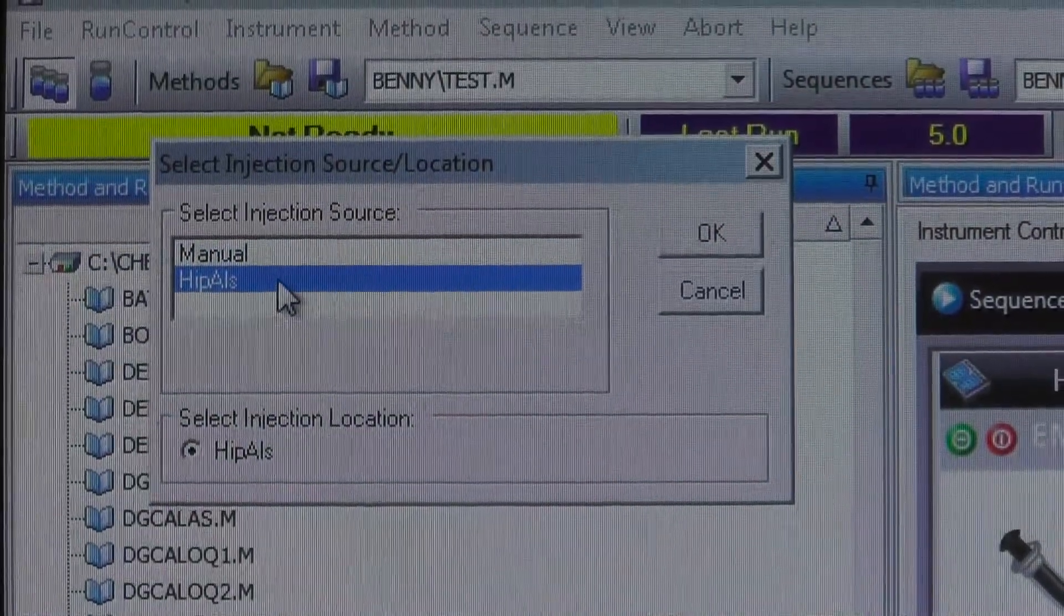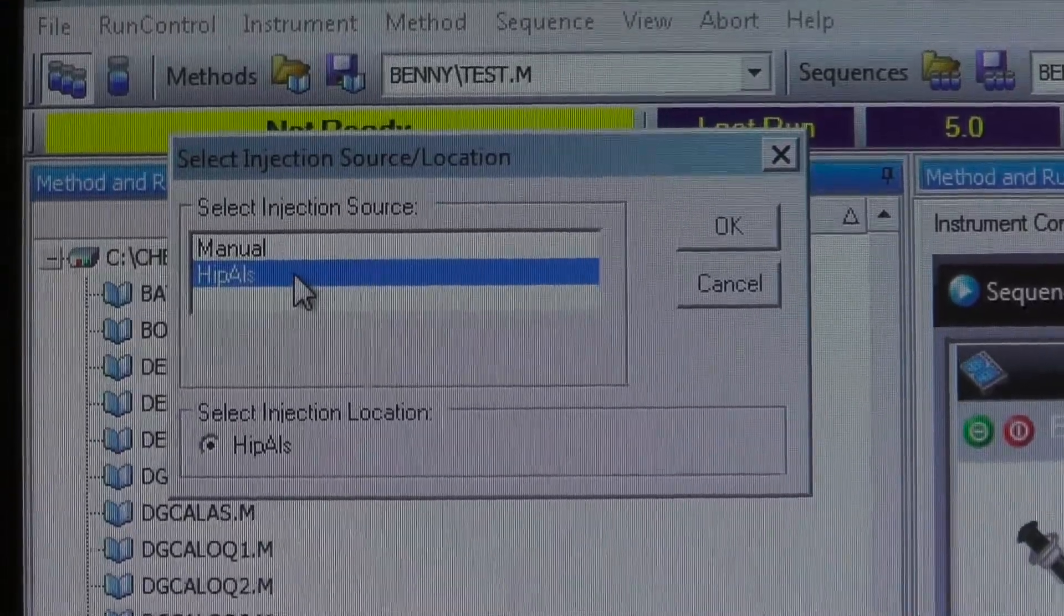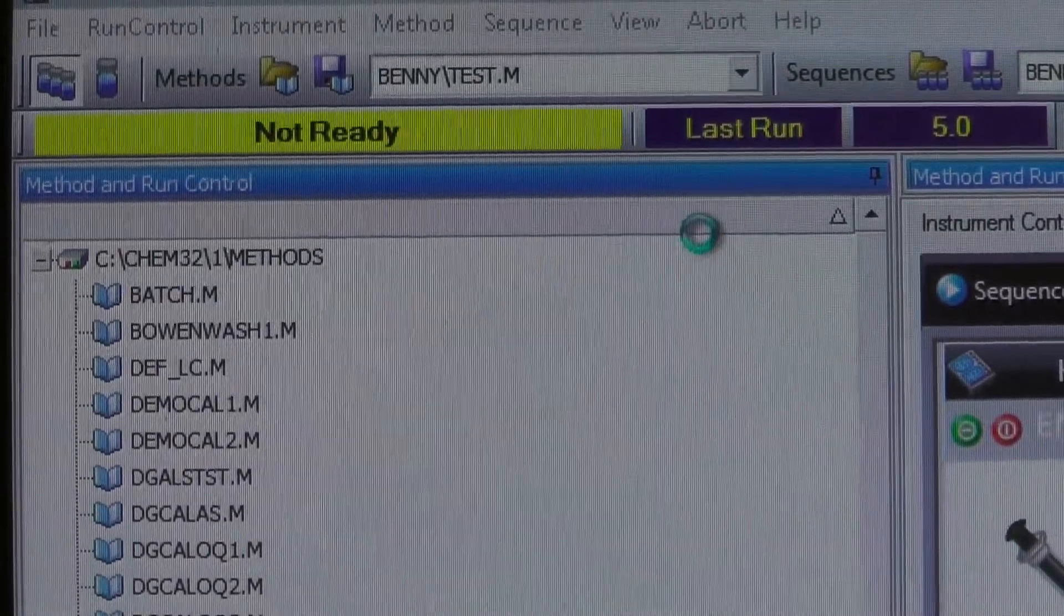A window will pop up automatically on the top left of the screen. For the HIP sampler type, always select HIP AIS. Click OK.